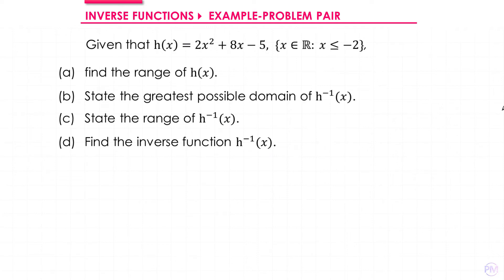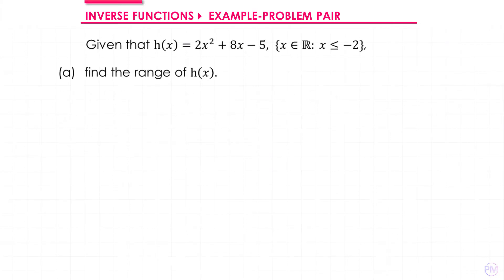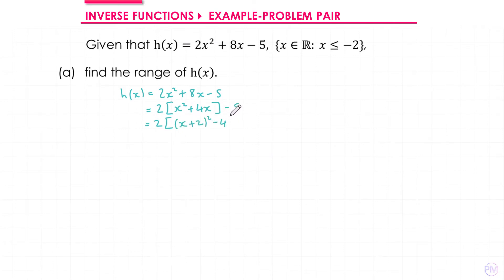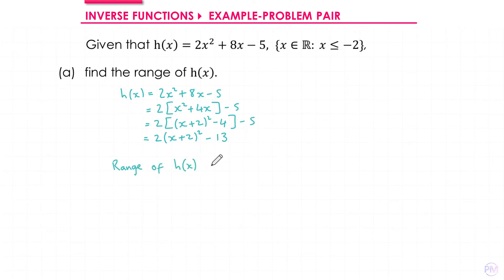Welcome back, here's my solution. In part a we need to find the range of h(x). To do that we complete the square — first pulling a factor of 2 outside the first two terms, then completing the square inside the bracket. Expanding out gives 2 times -4 = -8, take away 5 = -13. That tells us we have a minimum point at y = -13, so the range of h(x) is h(x) ≥ -13.